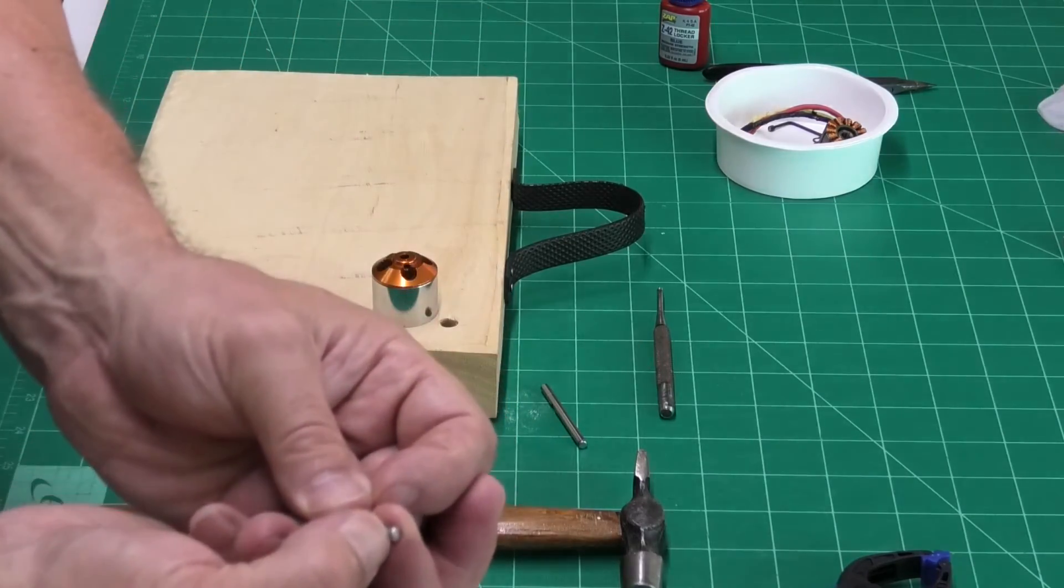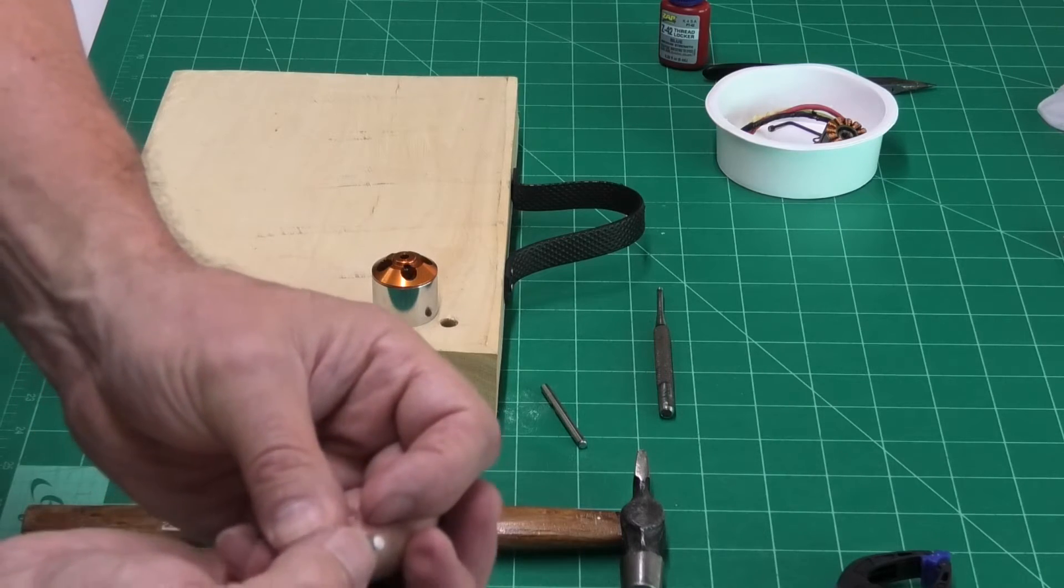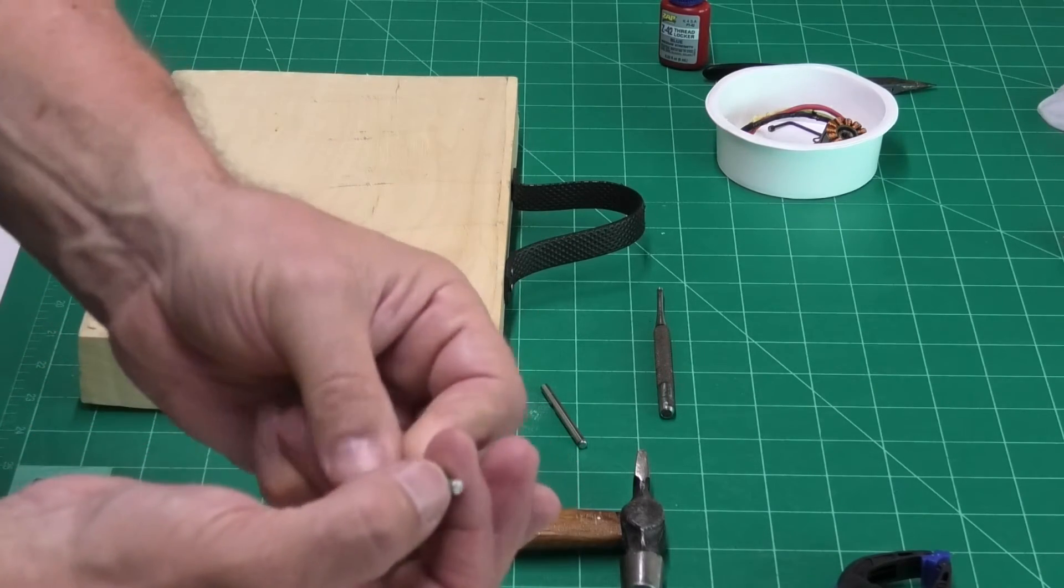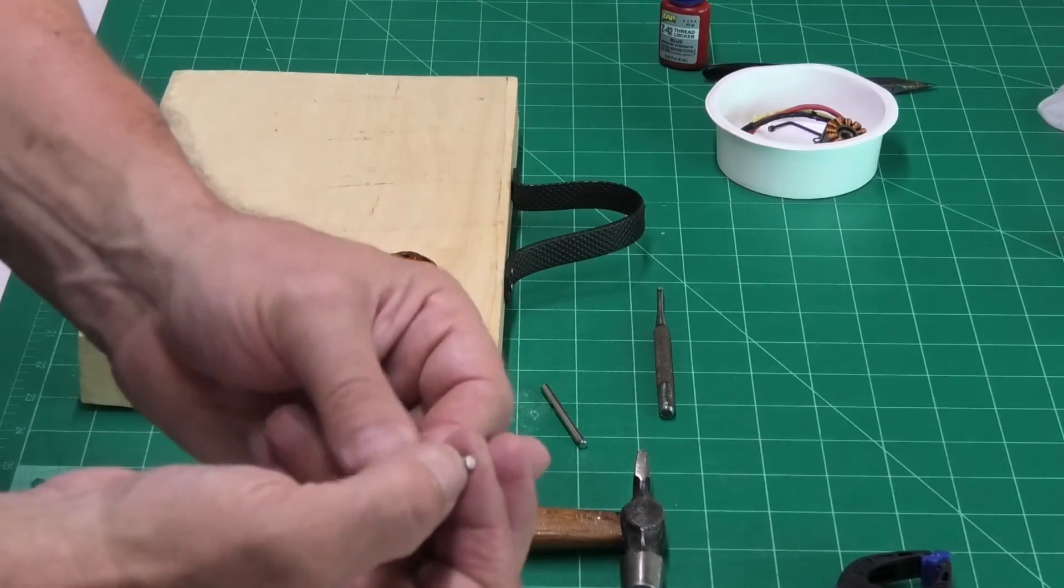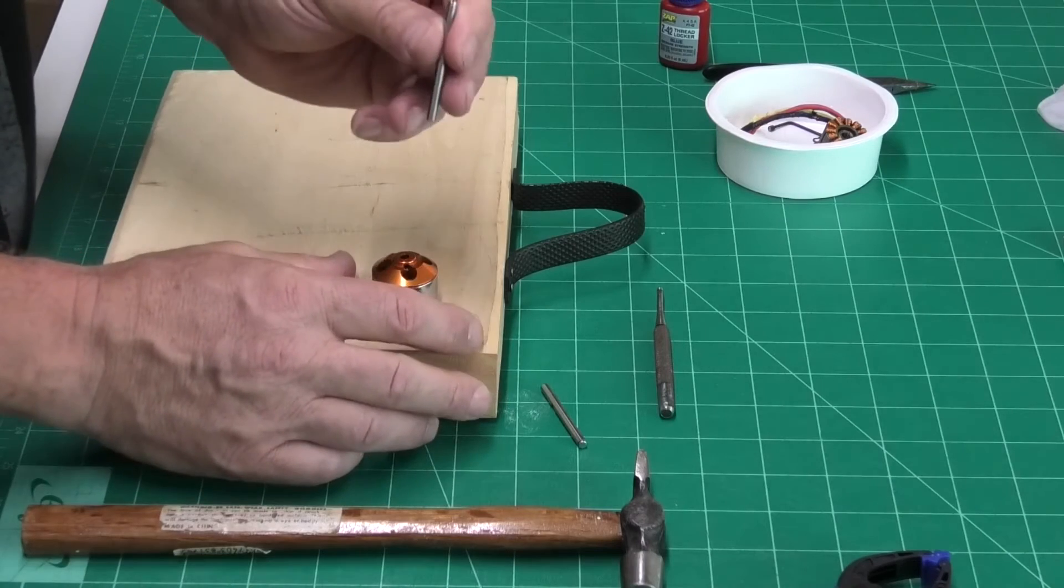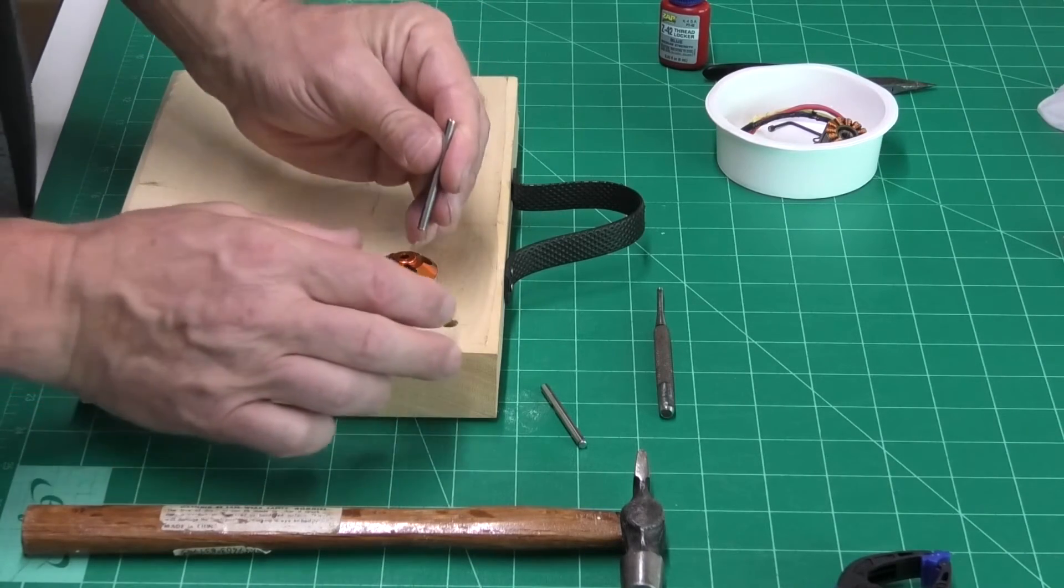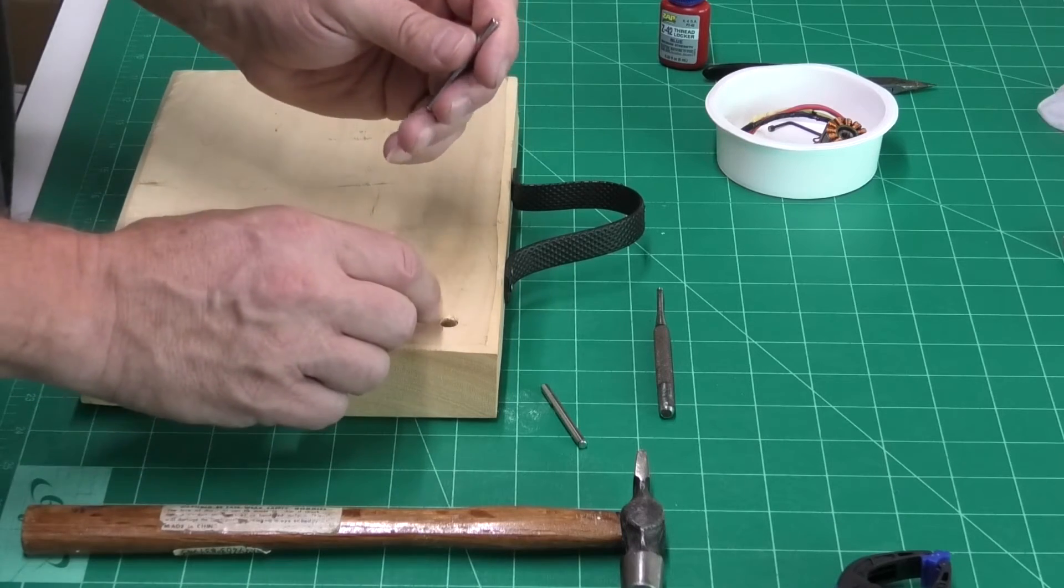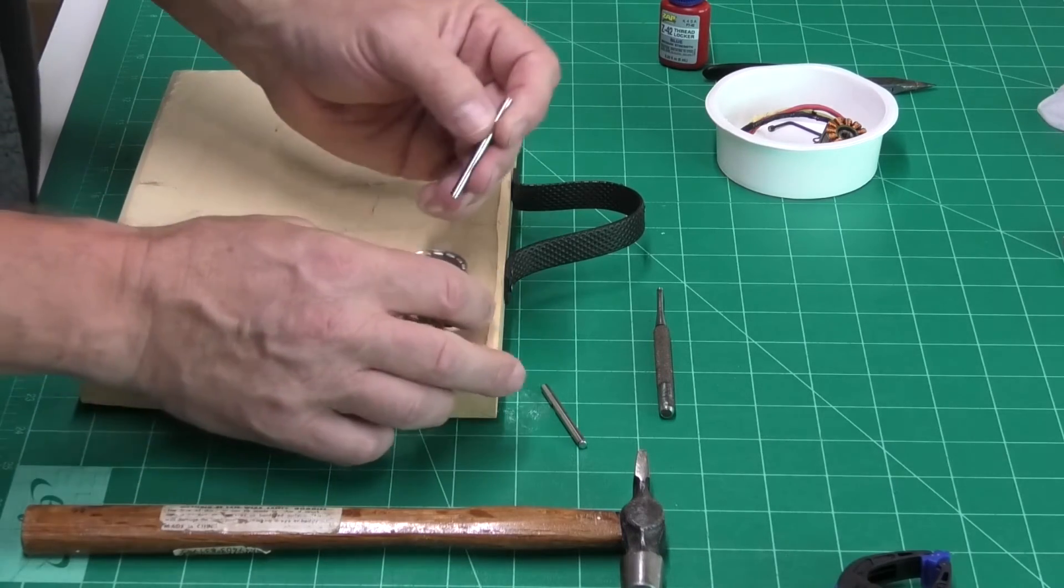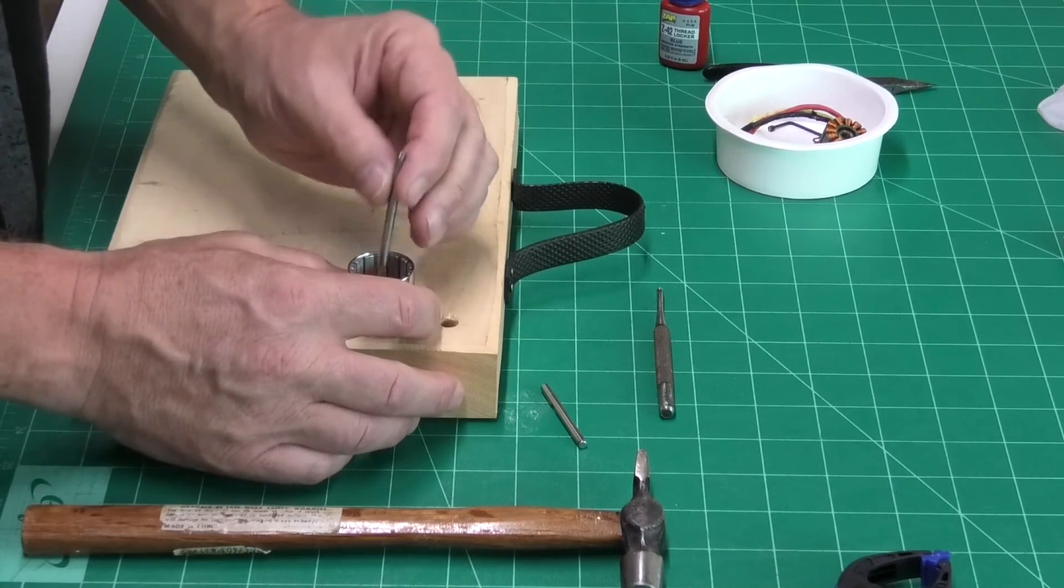Now, we've got the recess here for the circlip. So, what we need to do is make sure that that is facing down as we knock it in. But what we'll do, actually, is we'll knock it in from the bottom, I think. And then it's got less distance to travel.